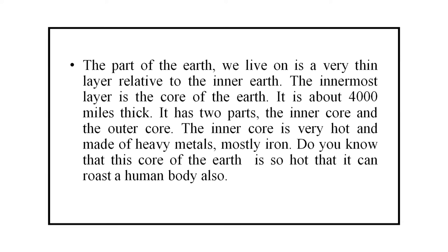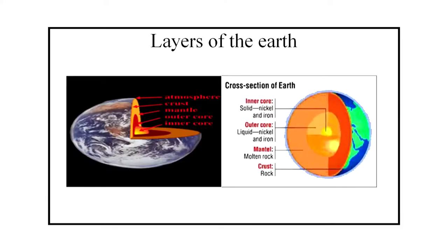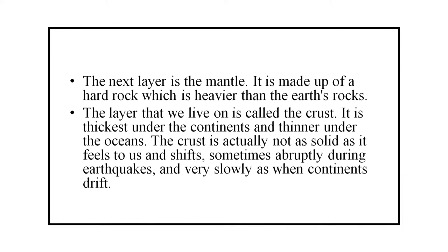The part of the Earth we live on is a very thin layer relative to the inner Earth. The innermost layer is the core of the Earth. It has two parts: the inner core and the outer core. The inner core is very hot and made of heavy metals, mostly iron. The next layer is the mantle. It is made up of hard rock which is heavier than the Earth's rock. The layer that we live on is called the crust. It is thickest under the continents and thinner under the oceans. The crust is actually not as solid as it feels to us and shifts, sometimes abruptly during earthquakes and very slowly as when continents drift.